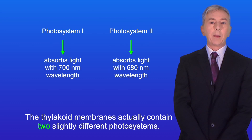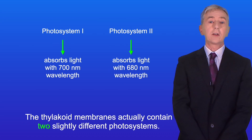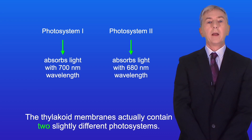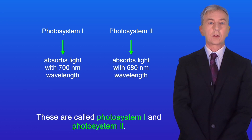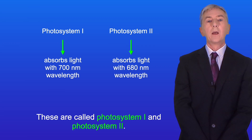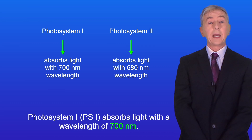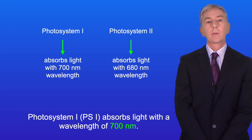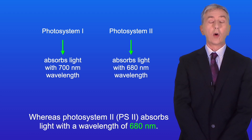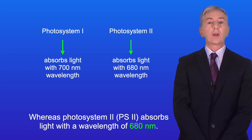The thylakoid membranes actually contain two slightly different photosystems. These are called photosystem 1 and photosystem 2. Photosystem 1, or PS1, absorbs light with a wavelength of 700 nanometers, whereas photosystem 2, or PS2, absorbs light with a wavelength of 680 nanometers.